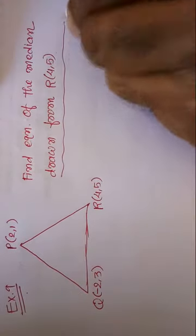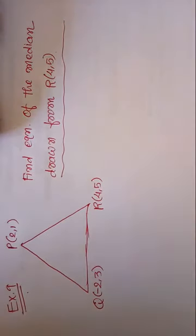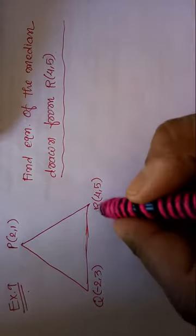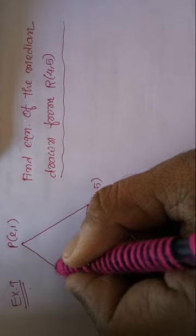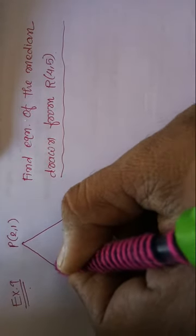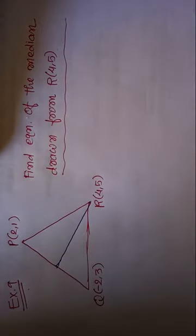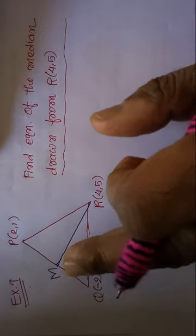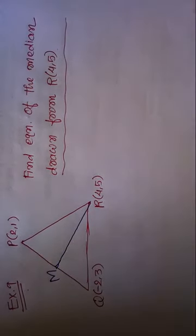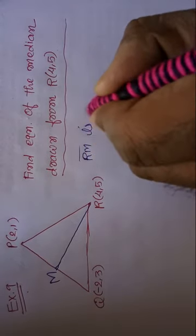I think you know the meaning of the median. The median is the line segment that passes through a vertex and intersects at the midpoint of the opposite side. So line segment RM is the median here.